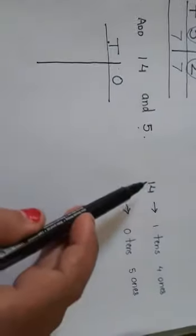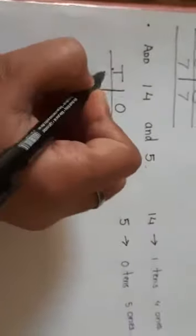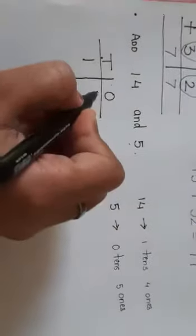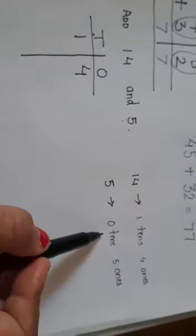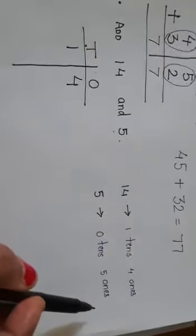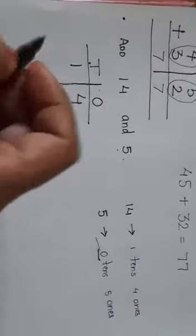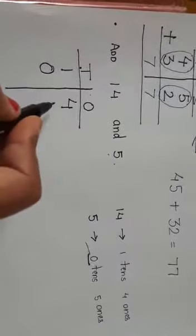Now what is the expanded form of 14? One tens four ones. Right? One tens and four ones is the expanded form of 14. So one kis ke ghar mein jaye ga? T ke ghar mein. Right? And four kis ke ghar mein jaye ga? Ones ke ghar mein. Now what about five? Five's expanded form is zero tens and five ones. Right? So zero kis ke ghar mein jaye ga? Tens ke ghar mein. And five? Ones ke ghar mein.